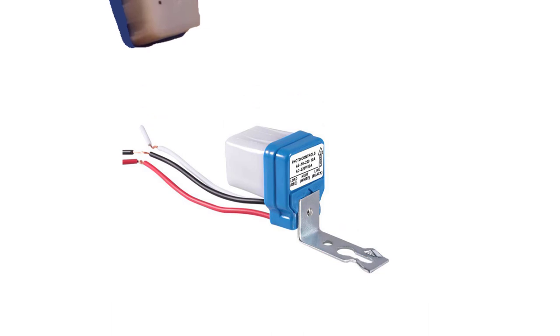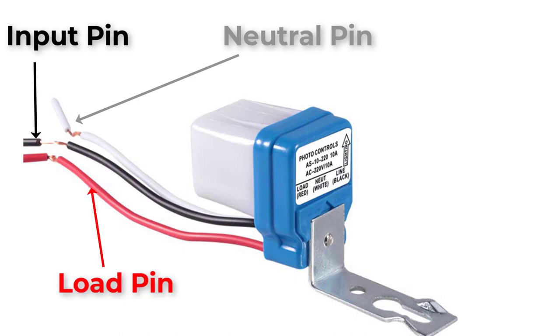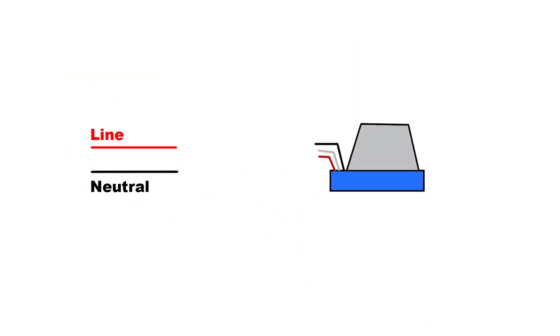The photocell switch has three pins: input pin, neutral pin, and output pin. Bring an AC source and a lamp. Connect the line to the input pin.